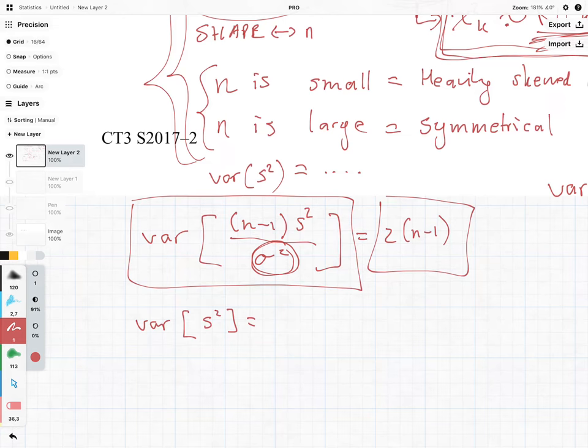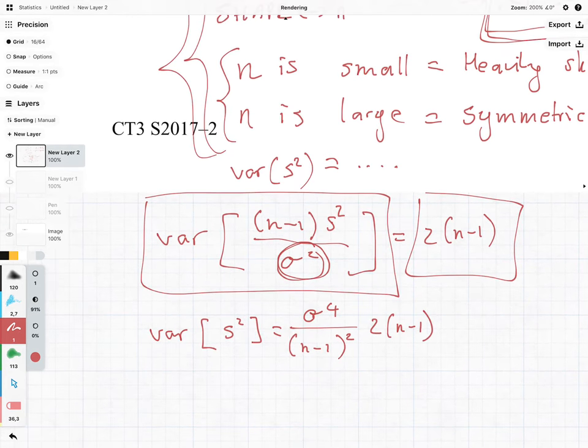So we're going to be squaring it and 2n minus 1. Is everyone happy with where we got that?